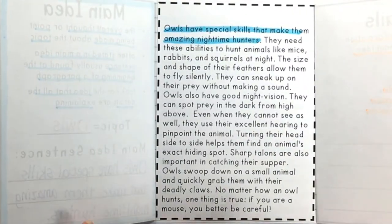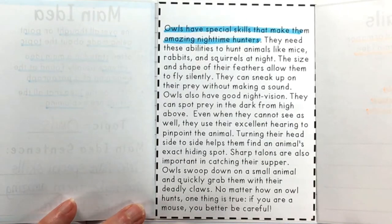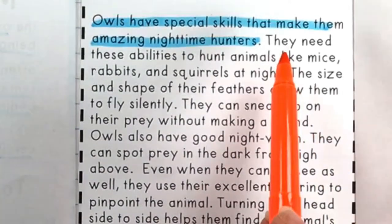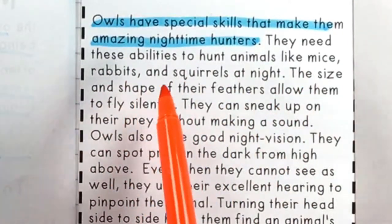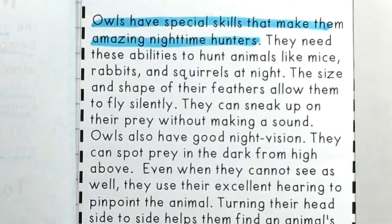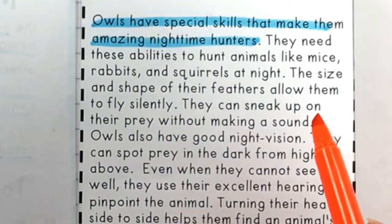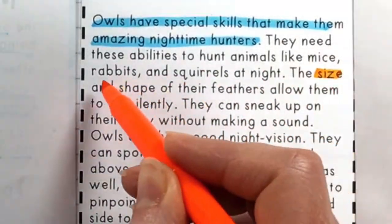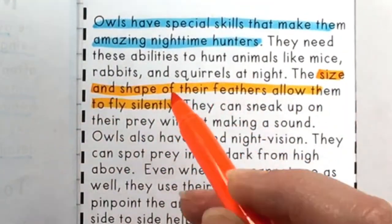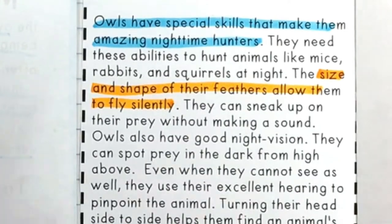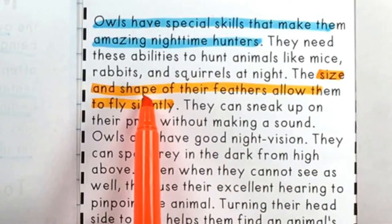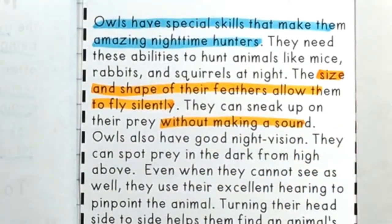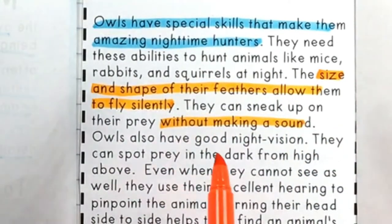Now we're going to highlight some of those details telling us more about the main idea. What are these special skills that make owls such good nighttime hunters? The size and shape of their feathers allow them to fly silently — unlike some other birds, their feathers don't make any noise when they're flying. They're able to sneak up on animals without making a sound. That is an important detail: their feathers allow them to fly silently, and they're not making any sound.